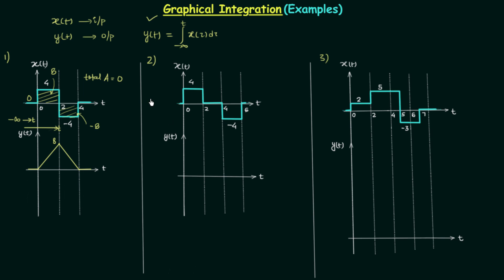For case number two, we calculate the total area first. It is again zero: this rectangle has area equal to eight, the signal is zero from two to four, and the next rectangle has area equal to minus eight, so total area is eight plus minus eight equals zero. From minus infinity to zero, yt is zero. Increasing t to two, the total area is eight, so we have a linearly increasing straight line up to eight.